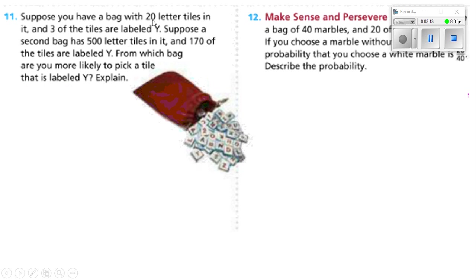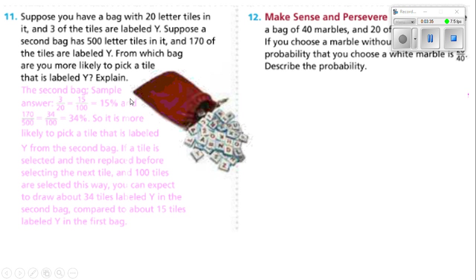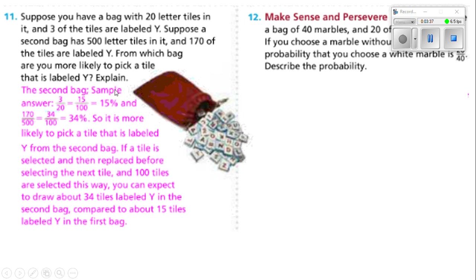If I put that in my calculator, I take three divided by 20 to get the percent chance of getting a Y. For the second bag, that would be 170 out of 500 — that sounds like a better chance of getting that Y. Three out of 20 is equal to 15 out of 100.